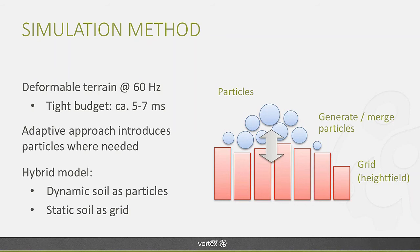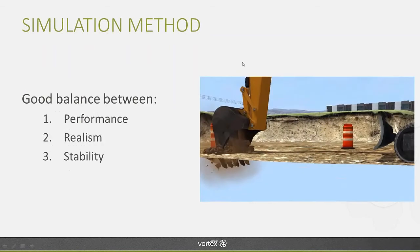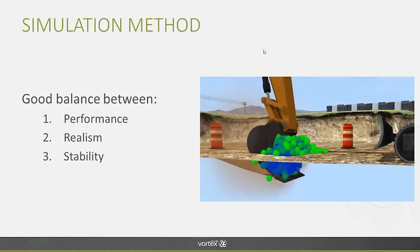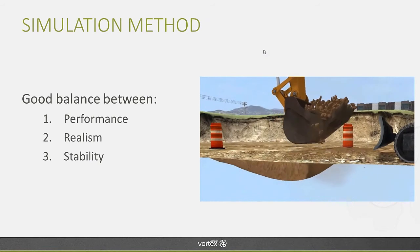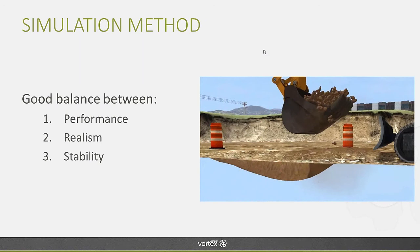To address this, Vortex uses a hybrid and adaptive approach that adaptively introduces particles only where needed. When you initiate soil flow with a cutting tool, particles are generated at runtime, and when they start settling they are reintegrated into a grid. This combines a mesh-free particle-based method with a grid-based simulation method, benefiting from the strengths of both: dynamic soil is simulated as particles, and static soil very efficiently as a grid. The system also tracks the compaction degree of particles at runtime, capturing compression and compaction fidelity.